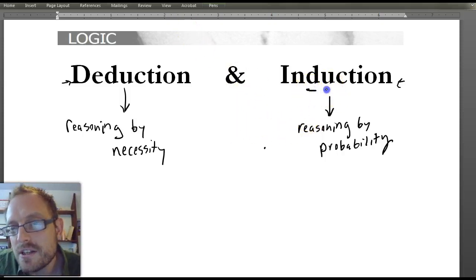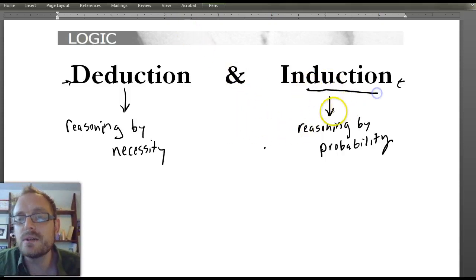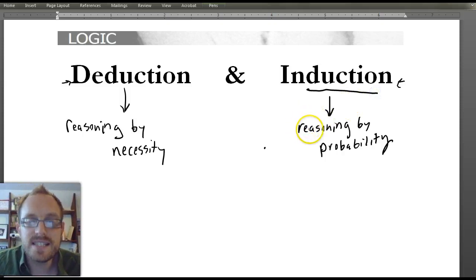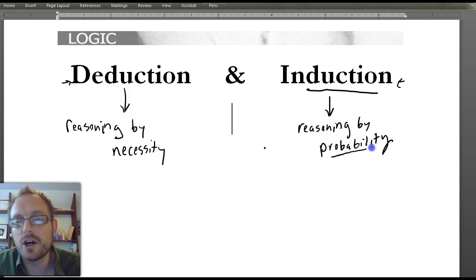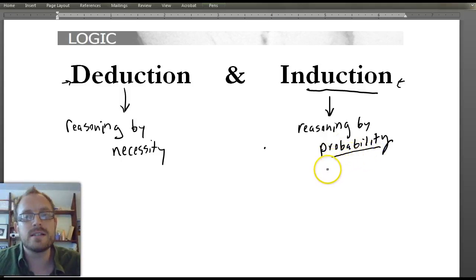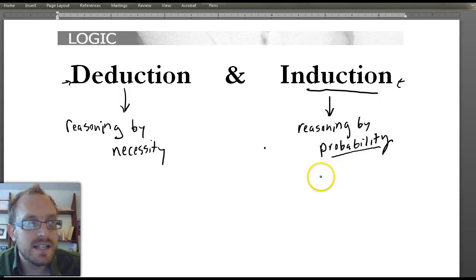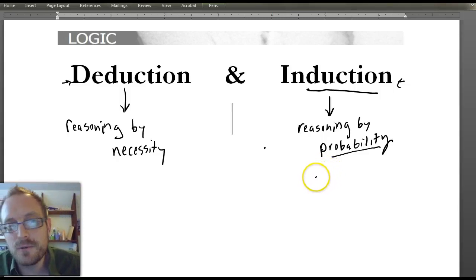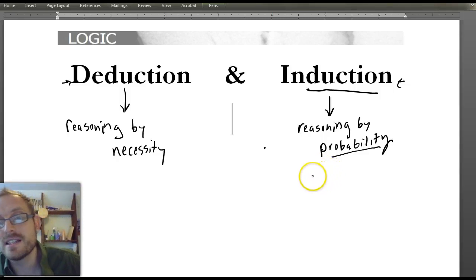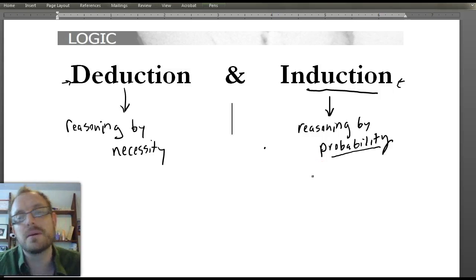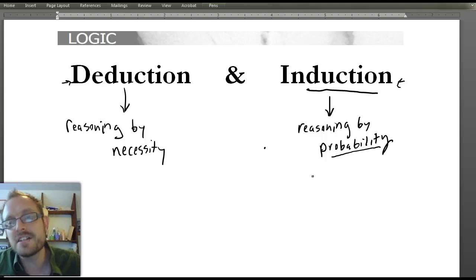By contrast, induction is reasoning where you don't know necessarily, but you can make an argument out of probability. For instance, the sun came up yesterday and every day before that — therefore it's likely that tomorrow the sun will come up. That's a good inductive argument, but it's inductive because it's only probably the case.